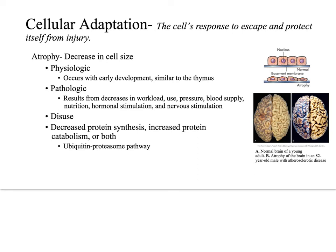Chaperones are specialized proteins required for proper folding and assembly of another protein or protein complex. An example of a disorder characterized by protein folding abnormalities might be amyloidosis or neurodegenerative diseases such as Alzheimer's or Huntington's, where there are abnormal protein aggregations. There could also be abnormal protein transport or secretion, which might present as cystic fibrosis or alpha-1 antitrypsin deficiency.